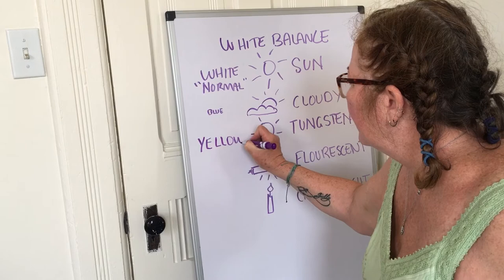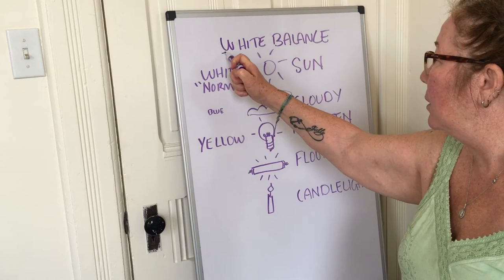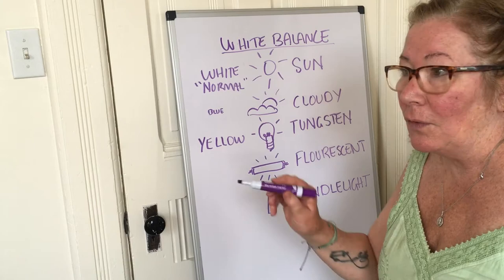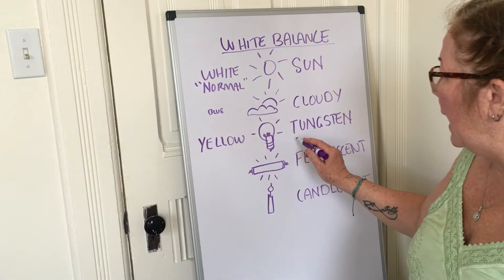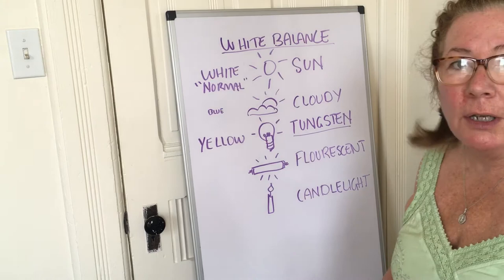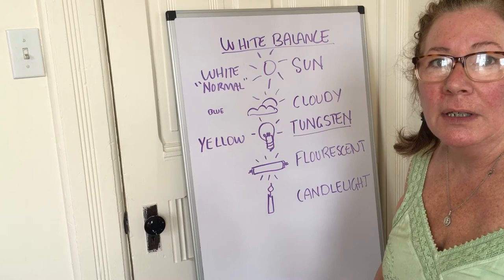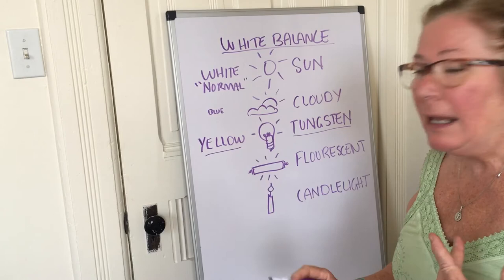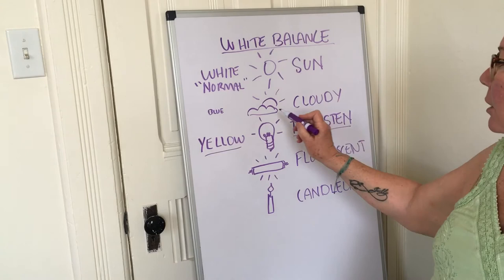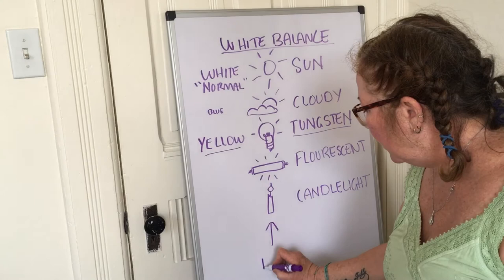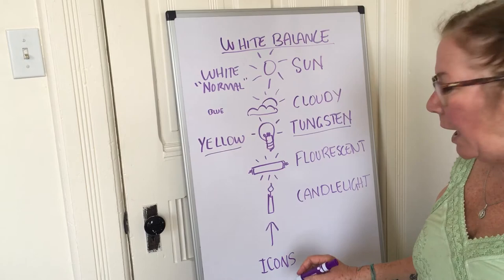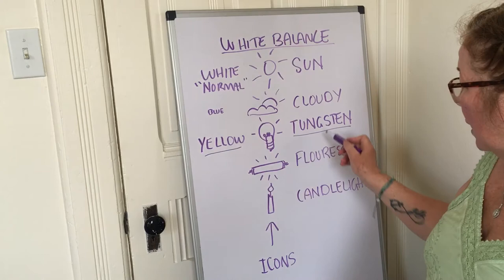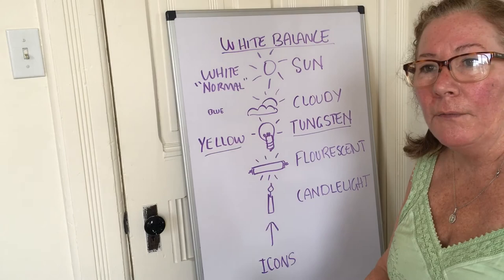If you're indoors and the light source is tungsten — those old-fashioned screw-in bulbs — go into your menu and change your white balance setting to tungsten. Select that icon so your camera will correct for the yellow cast. If you've ever taken a photograph that looks really yellowish, it's because you took it in tungsten light and didn't change the setting. Usually cameras use icons instead of words, but some cameras may actually spell out words like tungsten, fluorescent, candlelight, cloudy, or sun.